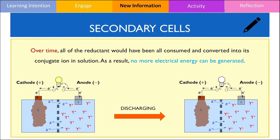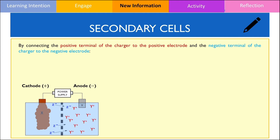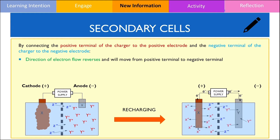However, when recharging the cell or battery, we need to connect the positive terminal of the charger to the positive electrode and the negative terminal of the charger to the negative electrode. In doing so, the charger supplies the battery with electricity which reverses the direction of electron flow. Hence, electrons will move from the positively charged electrode to the negatively charged electrode as shown in the diagram. Please note that in this process, since the positive electrode is now losing electrons, this is now the site of oxidation, which by definition is now the anode.